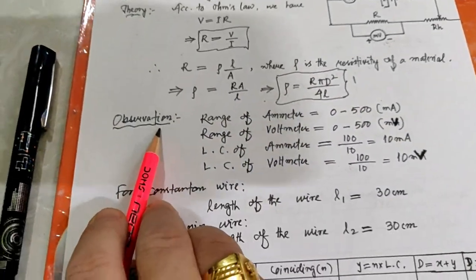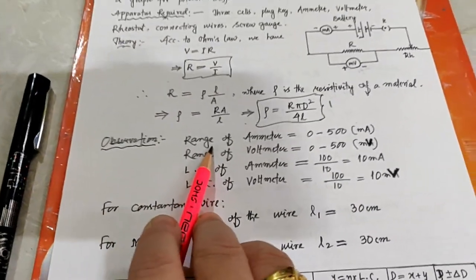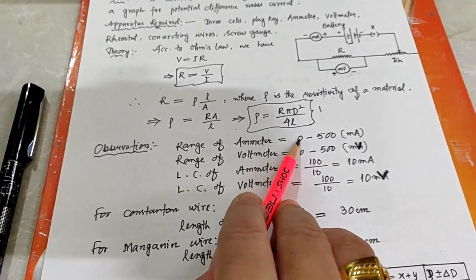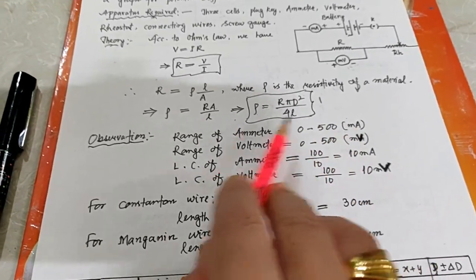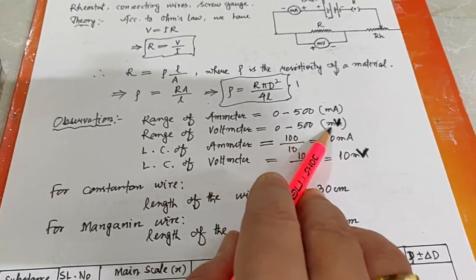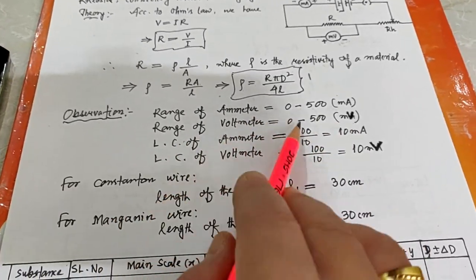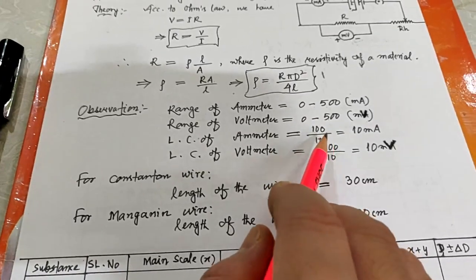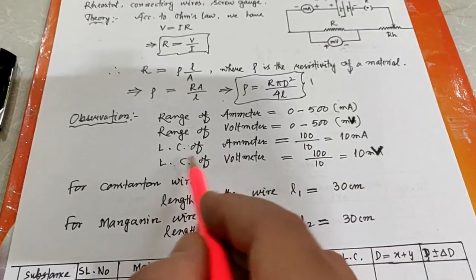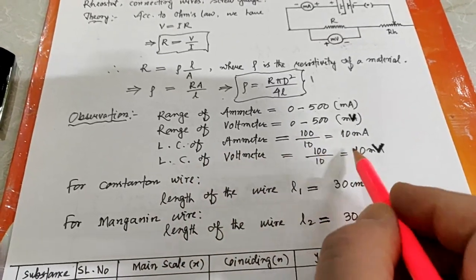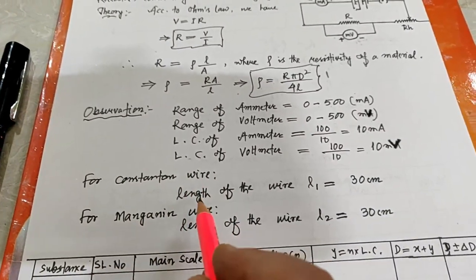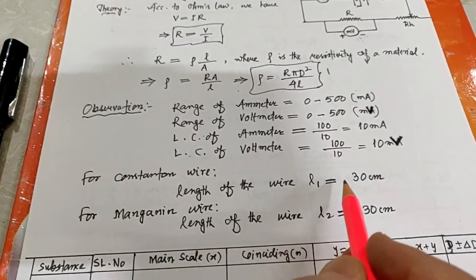Observation: the range of the ammeter is 0 to 500 mA, the range of the voltmeter is 0 to 500 mV. The least count of the ammeter is 100 divided by 10, equal to 10 mA. The least count of the voltmeter is 100 divided by 10, equal to 10 mV. The length of the constantan wire, L1, is equal to 30 cm.